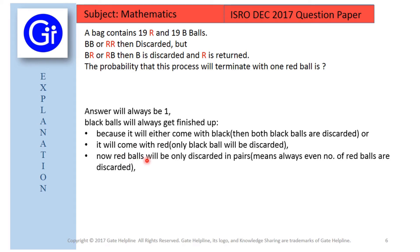Secondly, red balls will only get discarded in pairs, meaning always an even number of red balls are discarded. This is the key point to note. Since we have 19 red balls — an odd number — only 18 will be discarded, and one red ball will always remain in the bag.